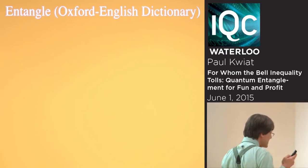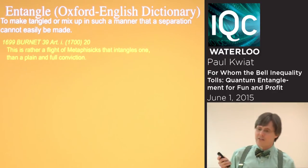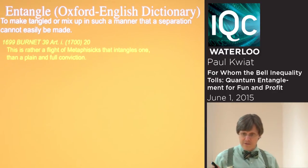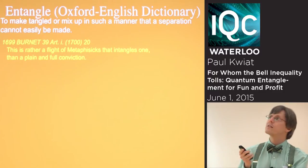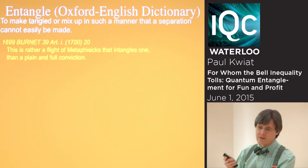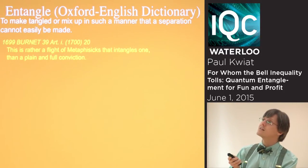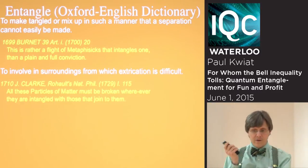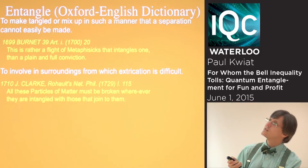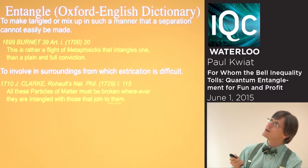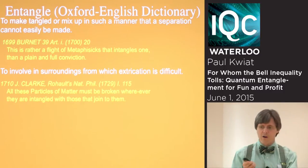We sort of already know what entanglement is, but I thought I'd give an introduction to the origins of the word from the Oxford English Dictionary. The first appearance came around 1700, where entanglement meant having things mixed up together in a way that you can't separate them. It's interesting that there's already a connection to metaphysics, and a quote about particles of matter that cannot be broken wherever they are entangled to those that join to them.